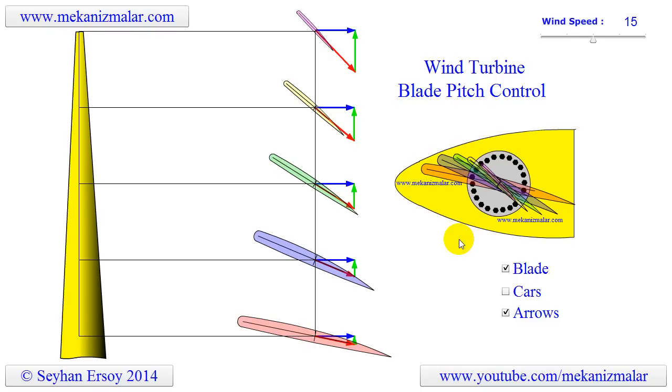On the other hand, the pitch control, which rotates the turbine blades around the blade center line whenever wind speed changes, is hard to understand. Why should the blade rotate around blade center line when the speed of the wind changes?